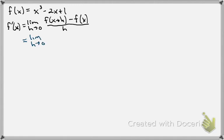So limit as h goes to 0. We'll continue to write that until we take the limit. f of x plus h, that's our function with x plus h replacing the x's. x plus h is the quantity cubed minus 2 times x plus h plus 1.